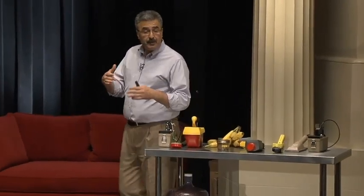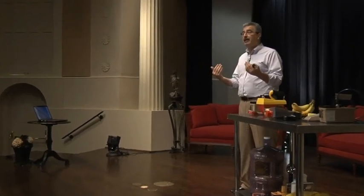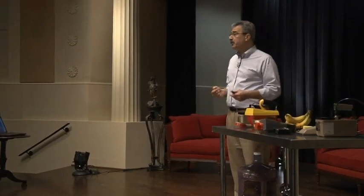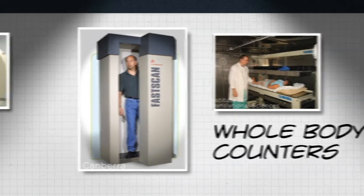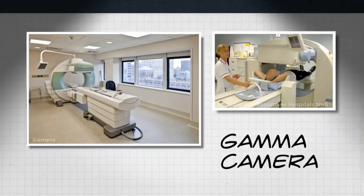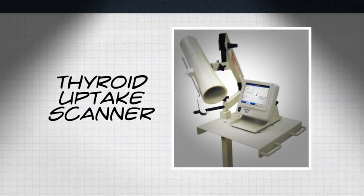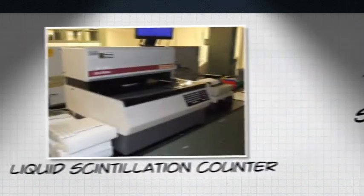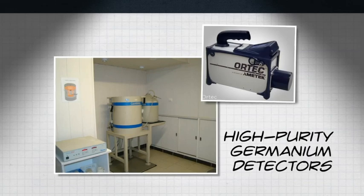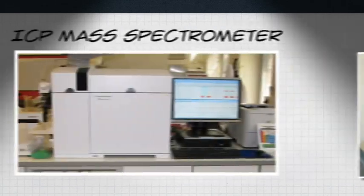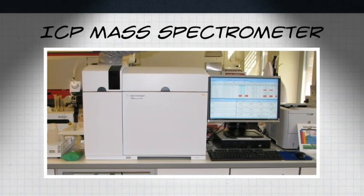There is also a specialized instrument to measure the amount of activity inside a person — when someone has internal contamination. These are called whole-body counters and they measure activity inside a person. Hospitals also have instrumentation to monitor the amount of radioactive materials given to patients. Laboratory equipment — very sensitive — can measure radioactivity in environmental samples like soil, water, or air, and also in clinical samples such as urine collected from people suspected of internal contamination.